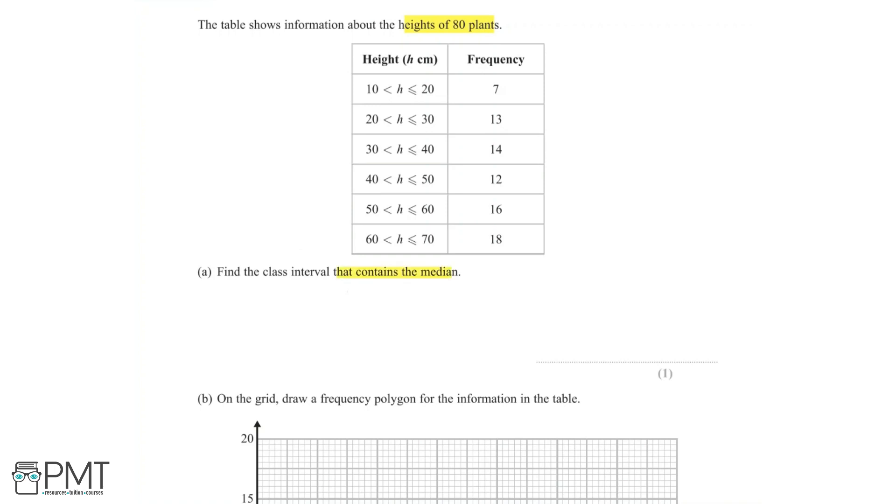Now if we have 80 plants in total, 80 divided by 2 is equal to 40. And so the median value will be found at the 40th position. This means we need to find the class interval at which the total frequency reaches 40.